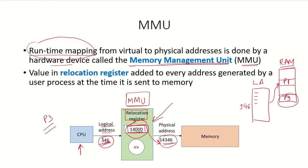This is how the MMU is very important for memory management. This mapping also ensures that no user process can enter or access the address space of any other process. How memory allocation is done will be covered in the next videos.